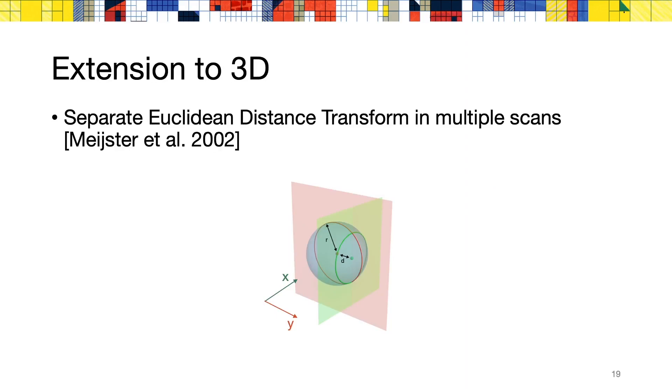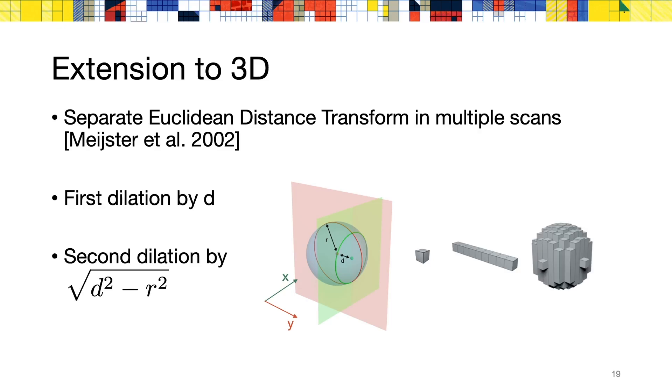Now that we have an algorithm for computing the dilation of a dexel in 2D, we need to explain how to extend this method to 3D. We observe that the dilation of a point, in red on the picture, can be separated into two steps. First, the dilation of the point into a segment along the y-axis. Then, the dilation of each point in this segment by a variable amount on the y-z plane, in green in the picture.